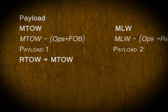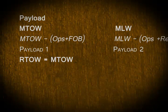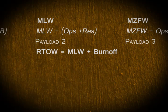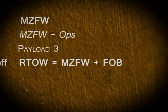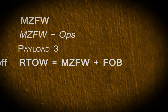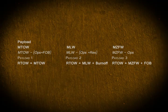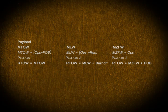Now, if payload one is the lowest amongst the three, then our regulated takeoff weight is equal to maximum takeoff weight. If payload two is the least, then regulated takeoff weight is equal to maximum zero fuel weight plus fuel on board. You could get a variation — they could give you the distance, fuel consumption per hour, ground speed, etc., and you can work it out based on speed and time formulas.